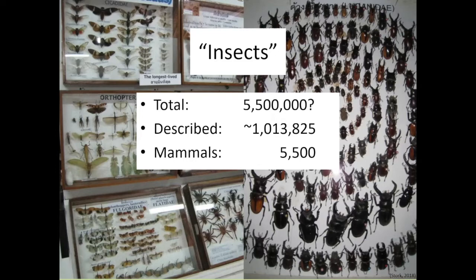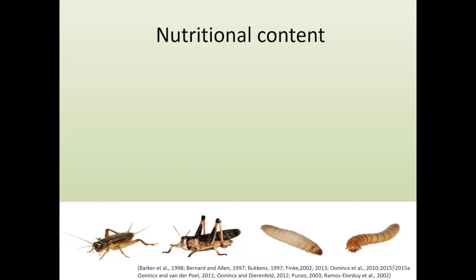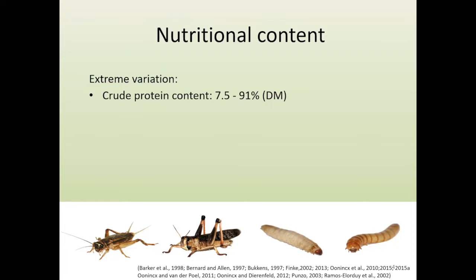This talk also covers other arthropods relevant to feeding amphibians — I'll include some springtails, specifically for smaller frogs. When talking about nutritional content across insects as a whole group, there is extreme variation. Crude protein content ranges from 7.5 to 91 percent on a dry matter basis — either very low or very high. A ballpark figure for an unknown insect would be about 60 percent crude protein on a dry matter basis.